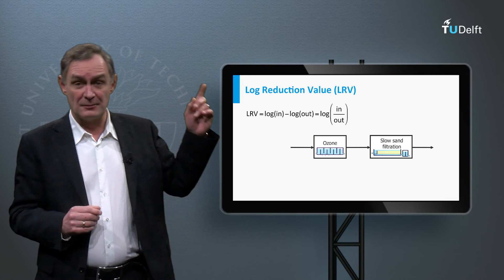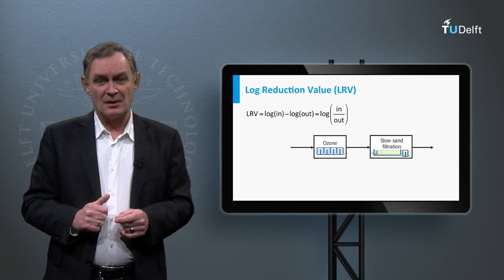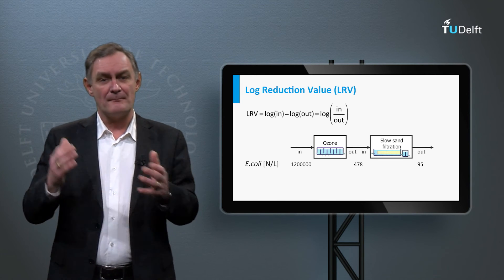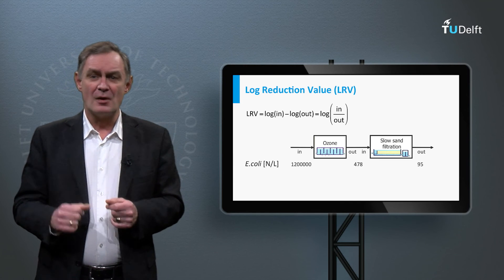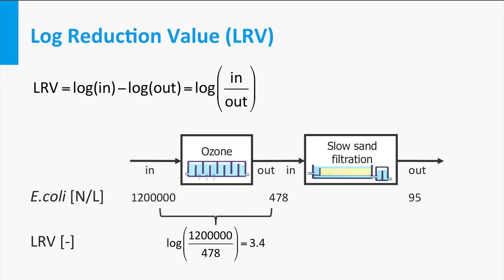2 log removal is equivalent to 99% removal and 4 log removal is 99.99% removal. As an example, a multi-barrier system is shown: first ozonation and then slow sand filtration. The incoming number of E. coli per liter is 1.2 million and the outgoing concentration after the ozone treatment step is 478 per liter. The log reduction value is then 3.4. Adding the log reduction value for the slow sand filtration gives a total log reduction value of 4.1.